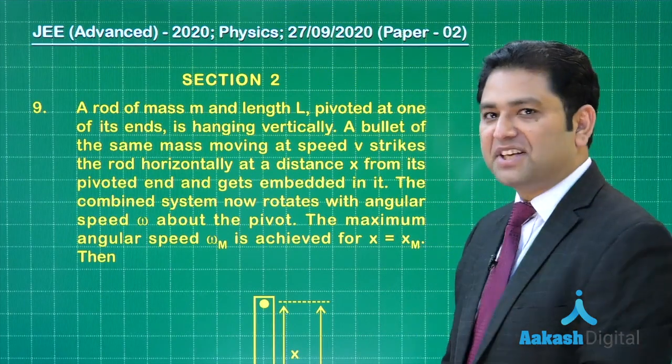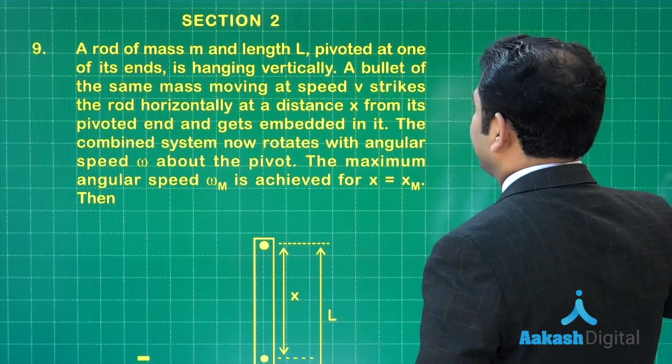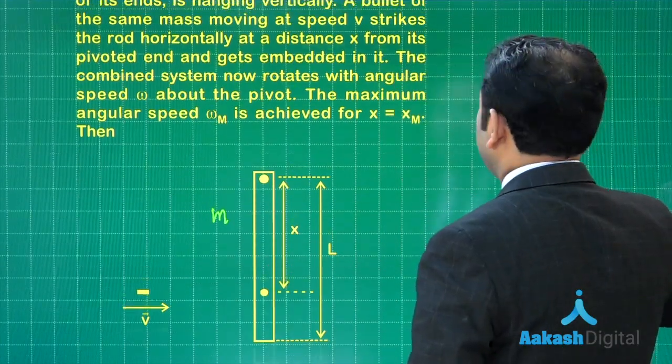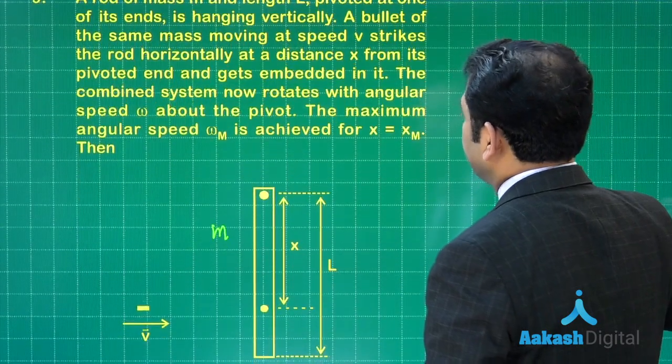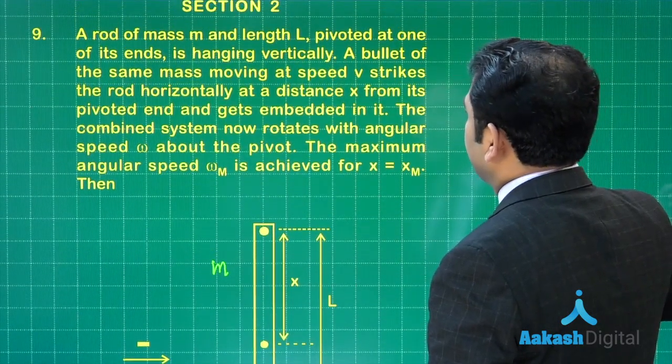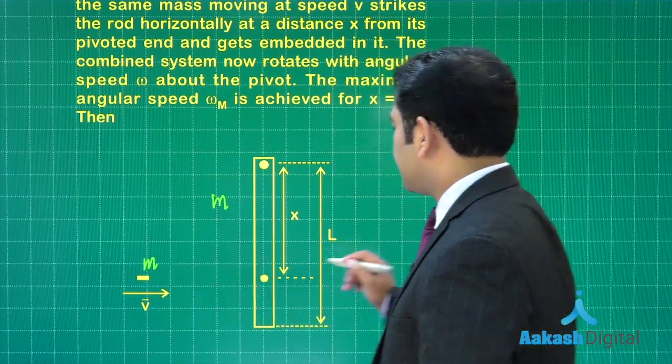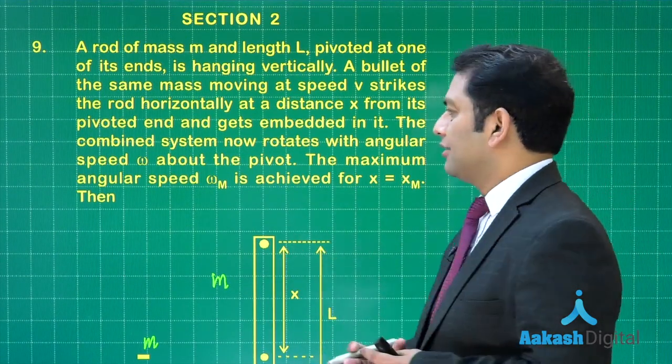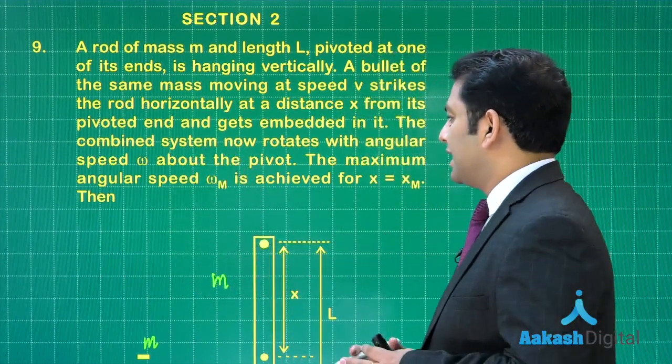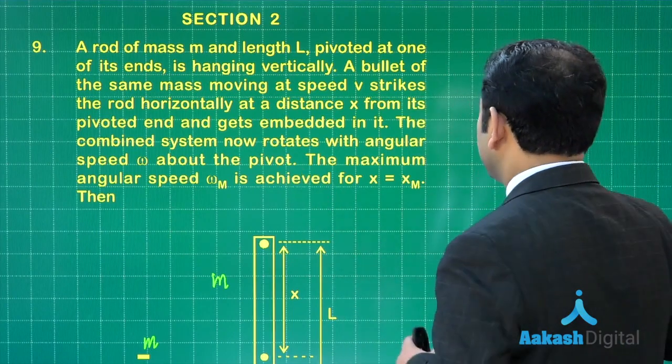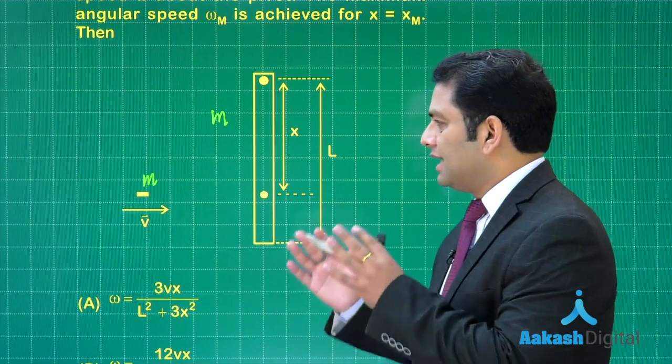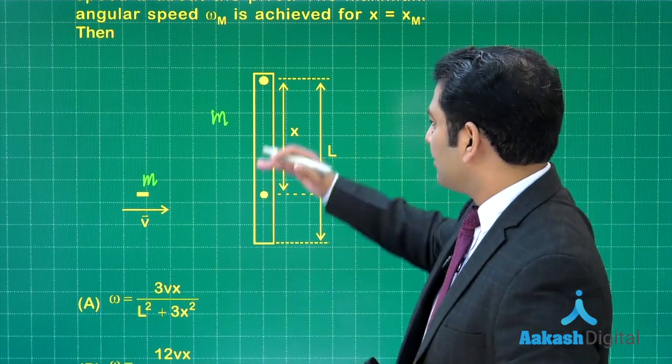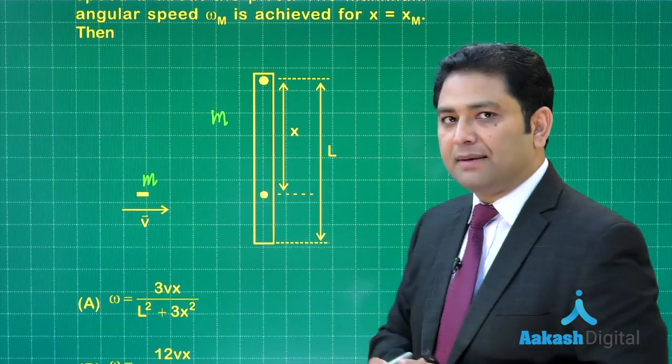Let us go to the next. The next is again rotation. Let us see what does it say. Rod of mass m, length l—here is the case, the rod of mass m and length l is there. It is pivoted at one of its ends, hanging vertically. A bullet of same mass—so the mass of the bullet is m—comes with a speed v and gets embedded into it. After that, obviously the combined system would start rotating. The maximum angular speed ω_m is achieved for x equals x_m. We are talking about the angular speed immediately after the impact.